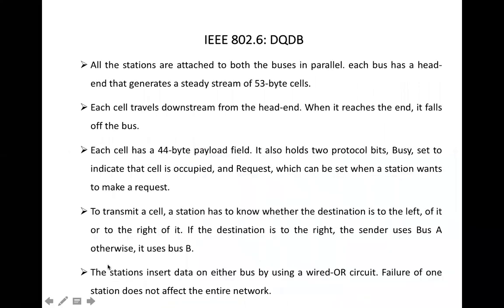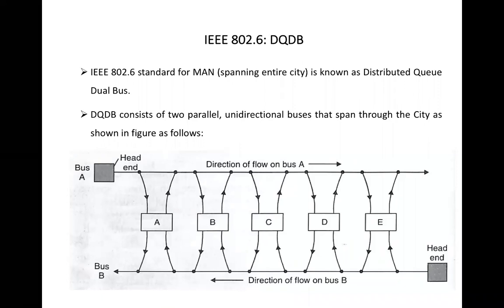In DQDB, the system cannot transmit the data when it has data to transmit. Suppose a station has data for transmission, it cannot transmit the data immediately. First of all, every station will have to reserve the bus first. The empty cell, the cell is the equivalent term of the frame. The cell will be generated by the head end, and then that cell will be transferred in the bus. The station that wants to transmit the data will copy its data to the empty frame. So this way, we will have to get access to the empty frame. We will have to do reservation first.